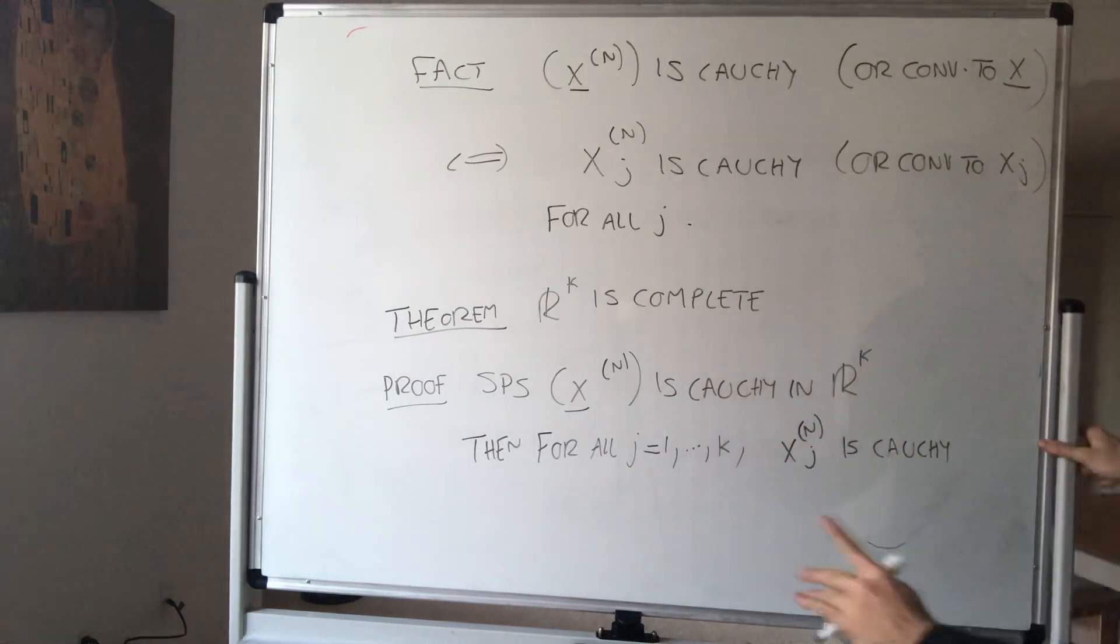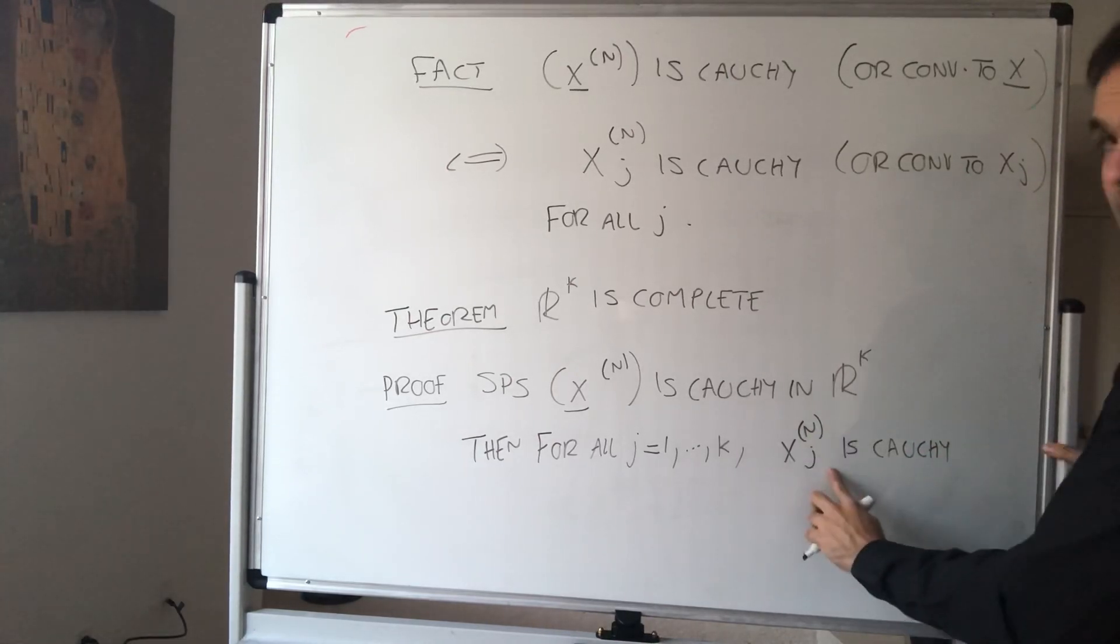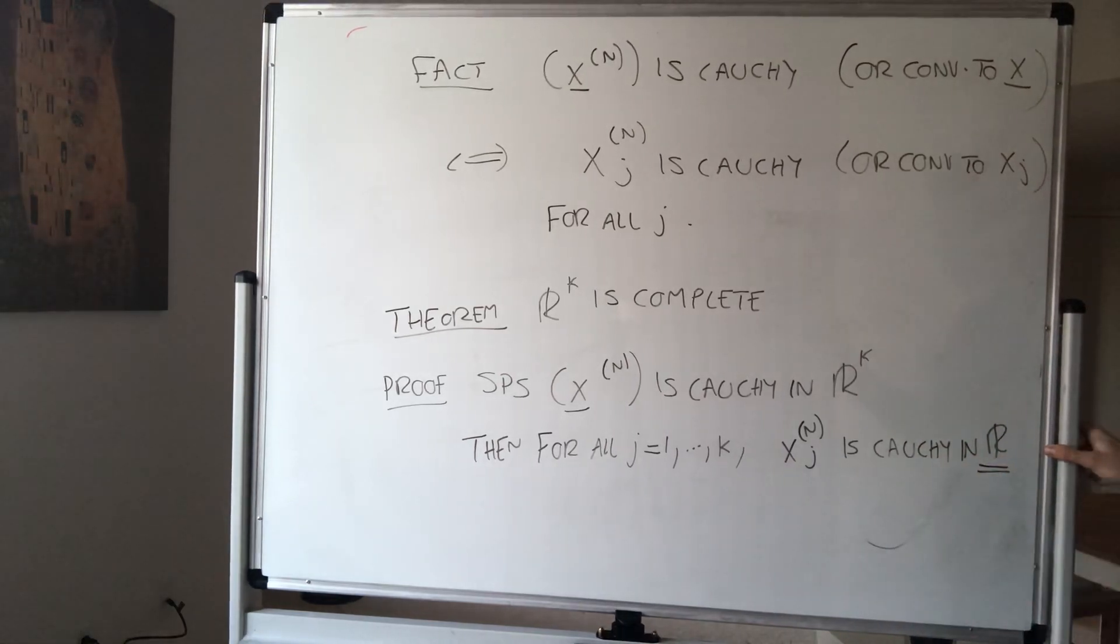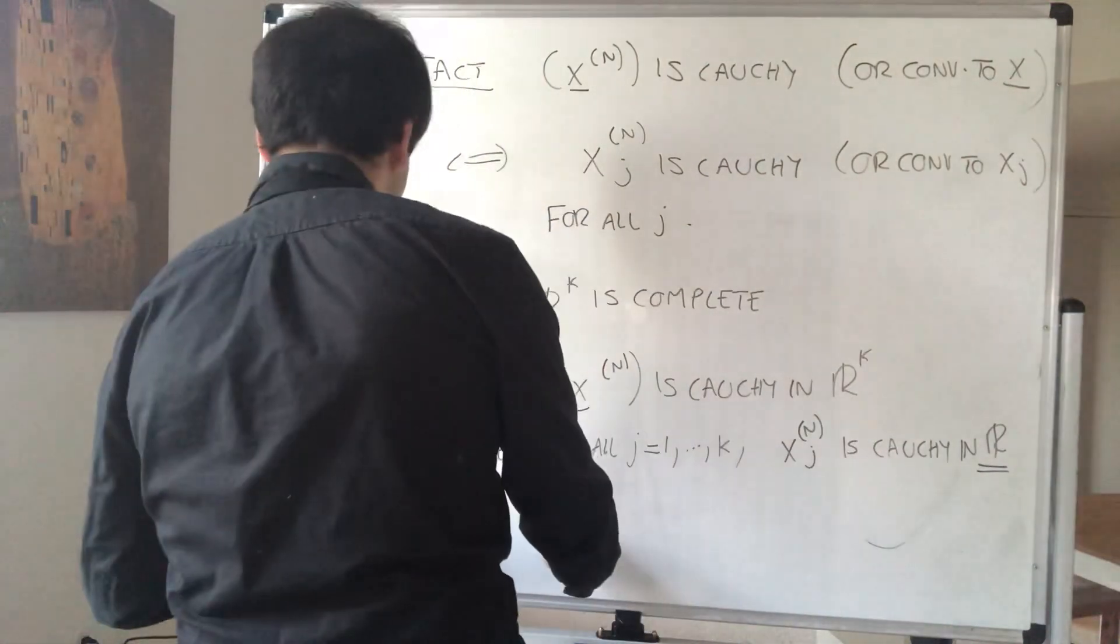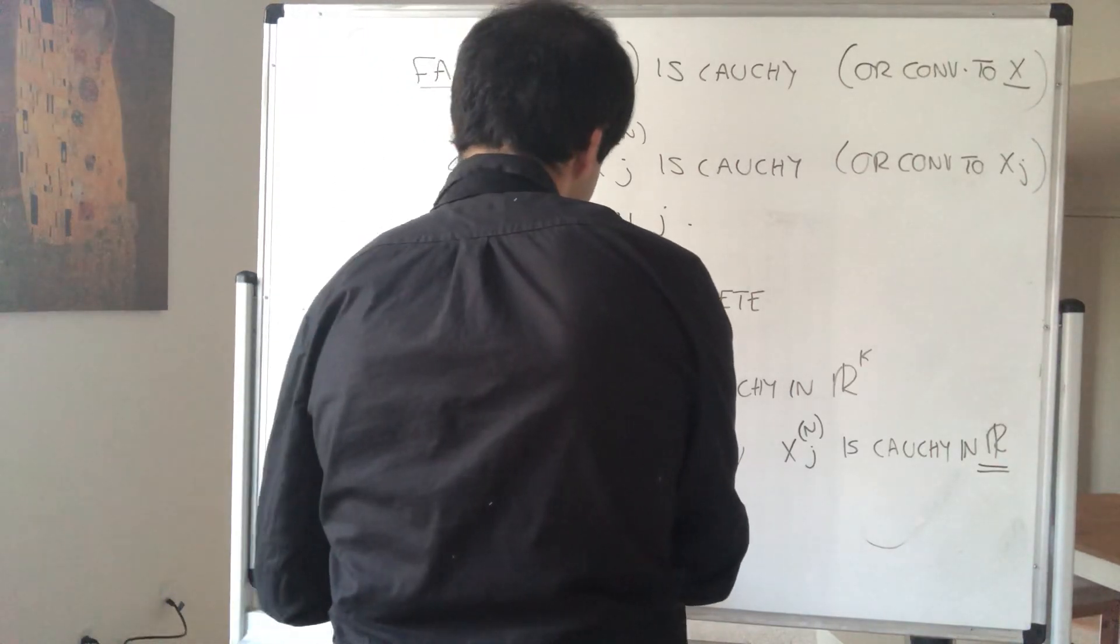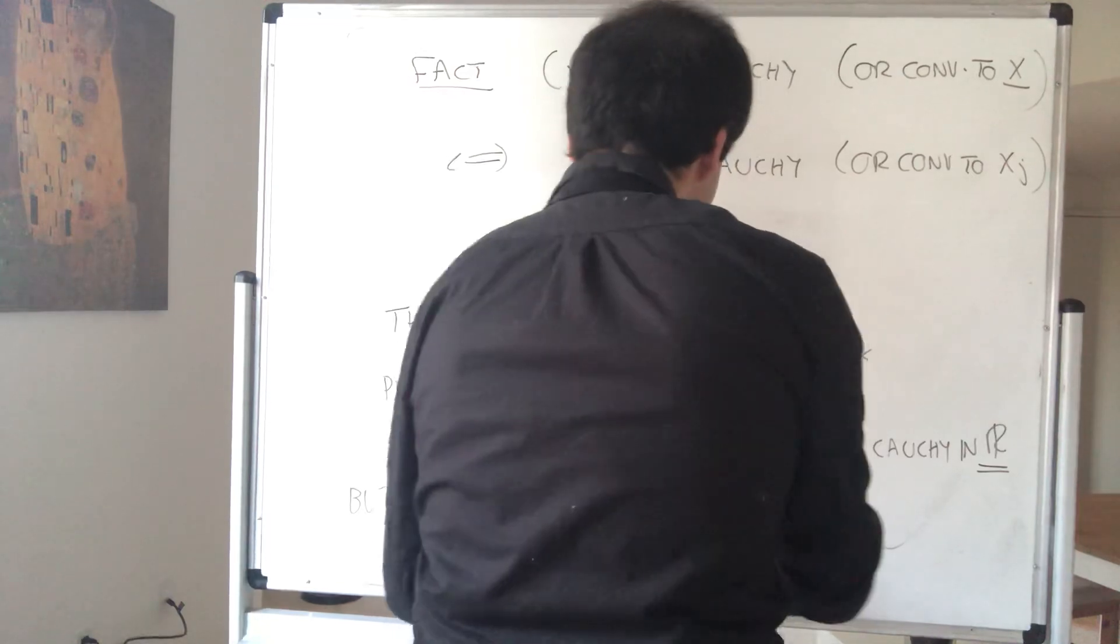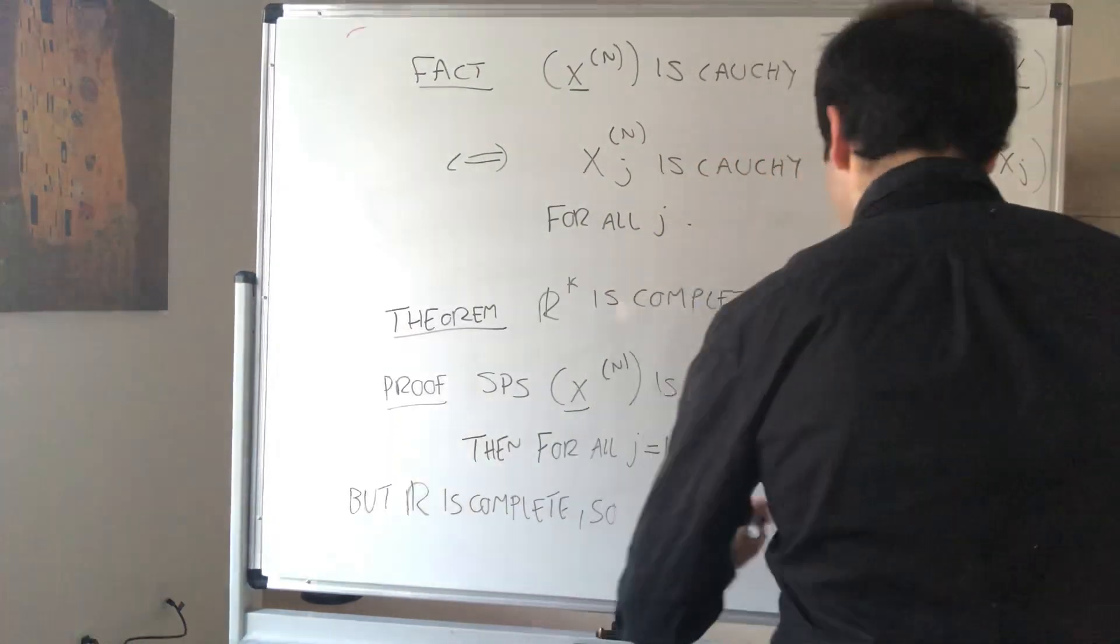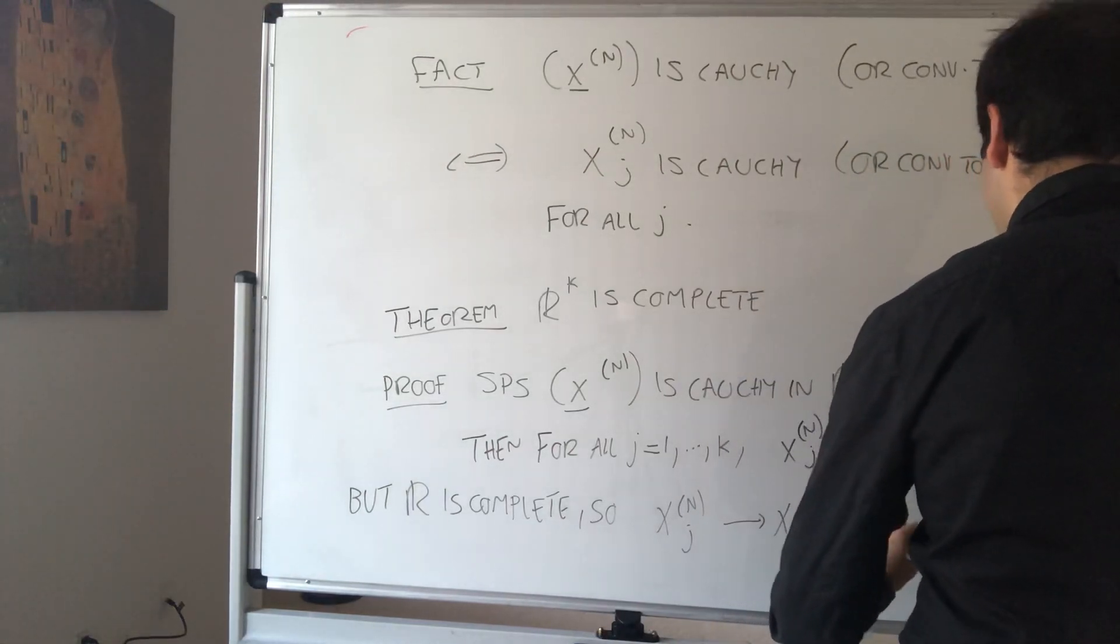But here's the thing, this is a Cauchy sequence of real numbers. So it's Cauchy in R, but we know that R is complete. We've already proven that. But R is complete. So X_n^j converges to X_j for some X_j.